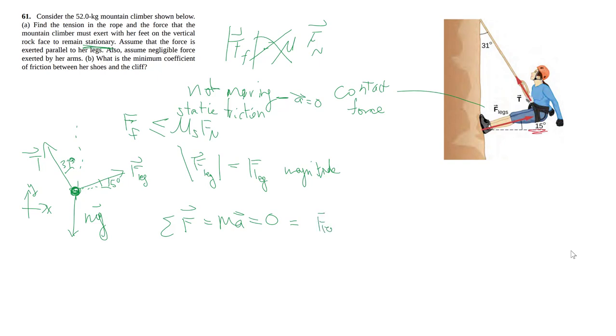f-leg gets breaking down into cosine 15 i plus sine 15 and the j both positive as we have defined it.